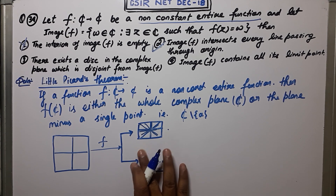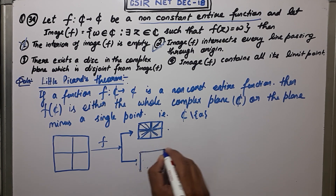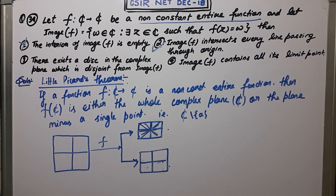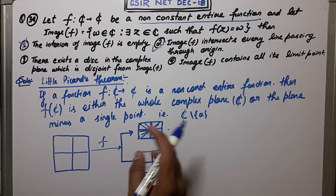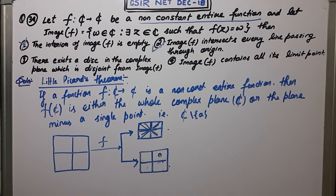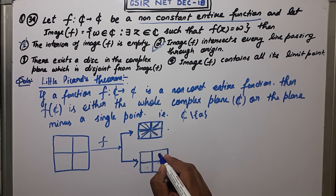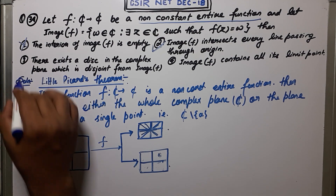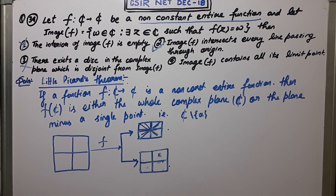Option 3 says there exists a disk in the complex plane which is disjoint from image f. But how can you make a disk on the complex plane that is disjoint from image f? Since image f is either the whole plane or the plane minus a single point, even a disk centered at the eliminated point will still intersect the plane. So Option 3 is false.